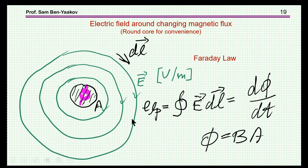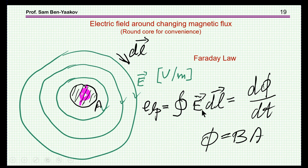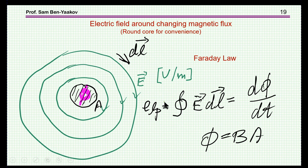So let's go back to Faraday's law. In simple terms: if you have a varying magnetic flux, there will be an electric field built around it — in units of volts per meter. Faraday's law says that if you go through a path and multiply the electric field by the distance in a vector way, completing a full circle, you end up with a voltage equal to dΦ/dt, where Φ is the magnetic flux. If the flux density is constant, it's simply B times A.